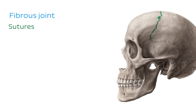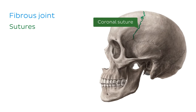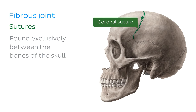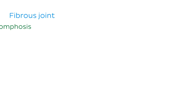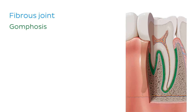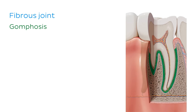Firstly, we have sutures, which are fibrous joints found exclusively between the bones of the skull. We can see a nice example in our illustration here, which is the coronal suture. This suture connects the frontal bone to the parietal bones via sutural ligaments. Next, we have a gomphosis, which is found in the mouth, where the roots of the teeth articulate with the dental alveoli at the dental alveolar joints. The tooth is bound into its socket by the strong periodontal ligament, which we can see here highlighted in green.